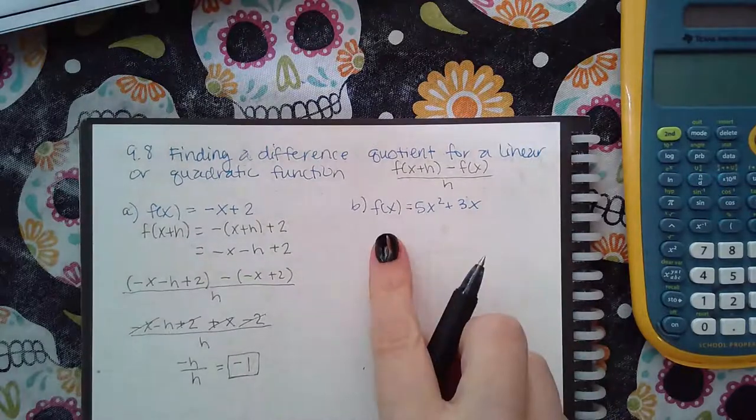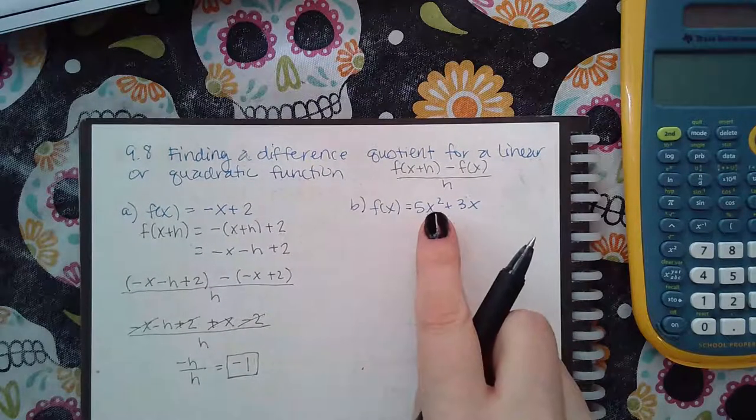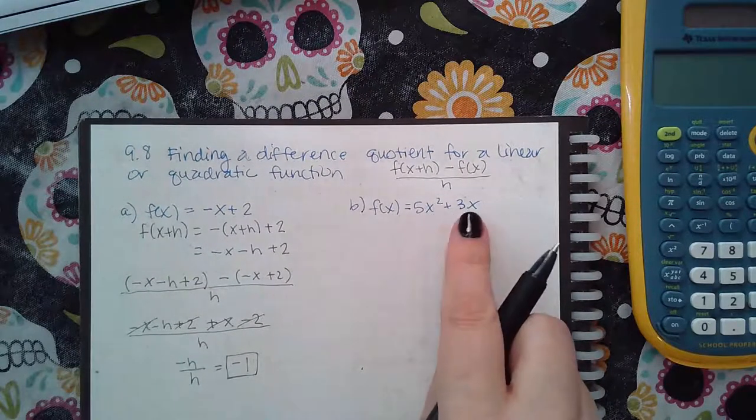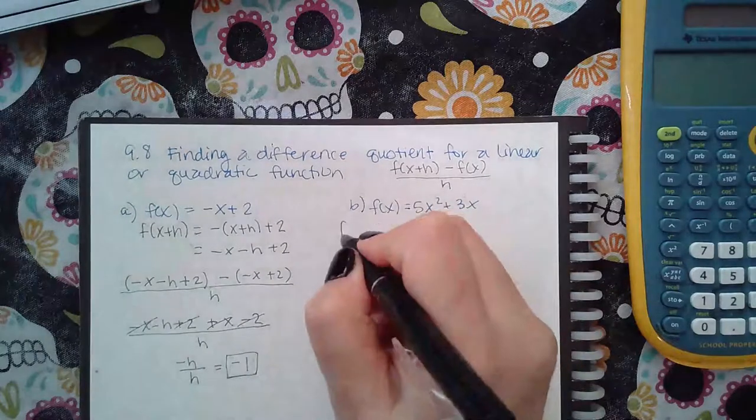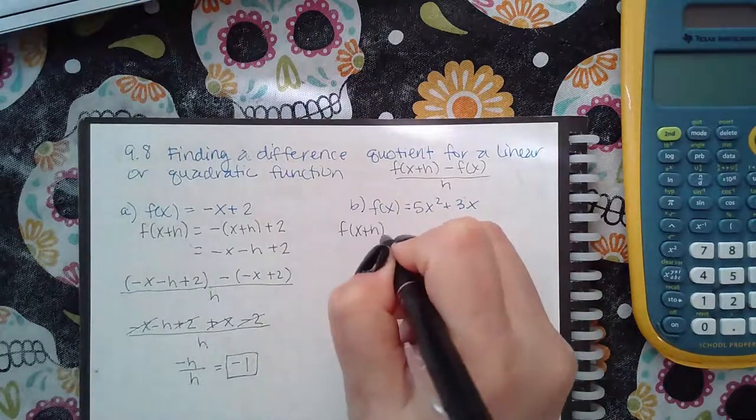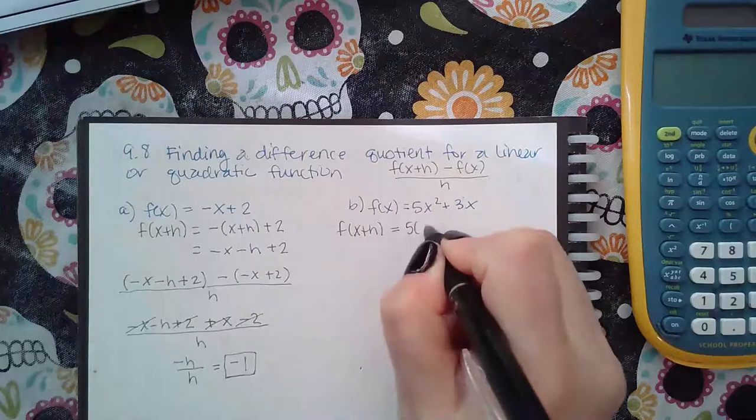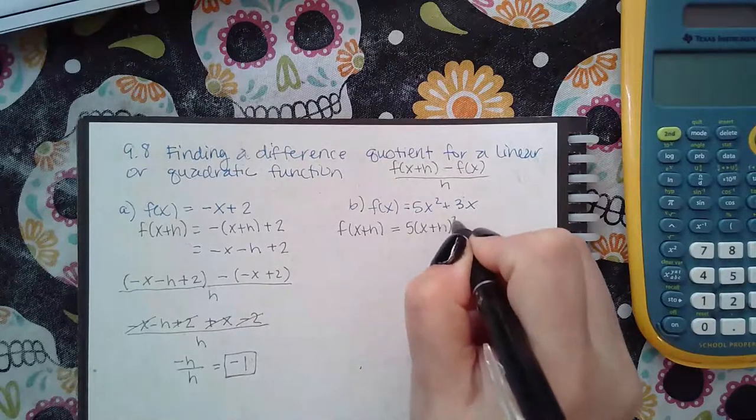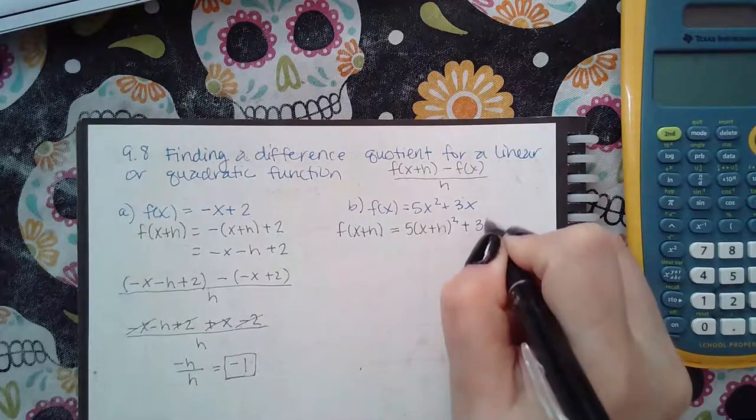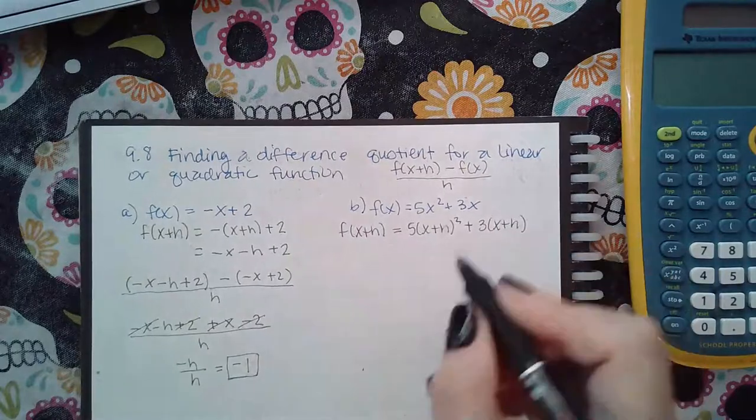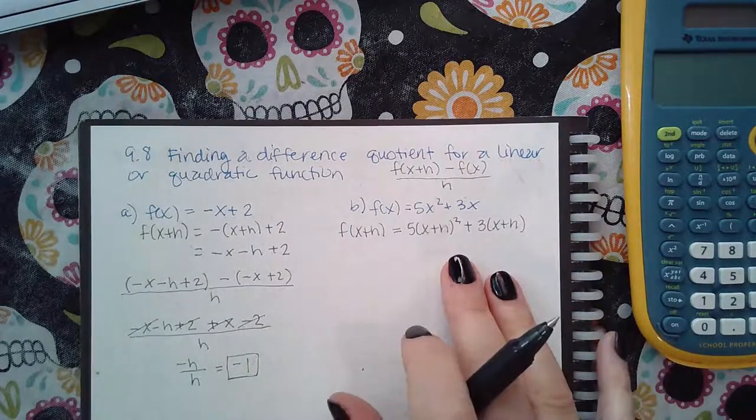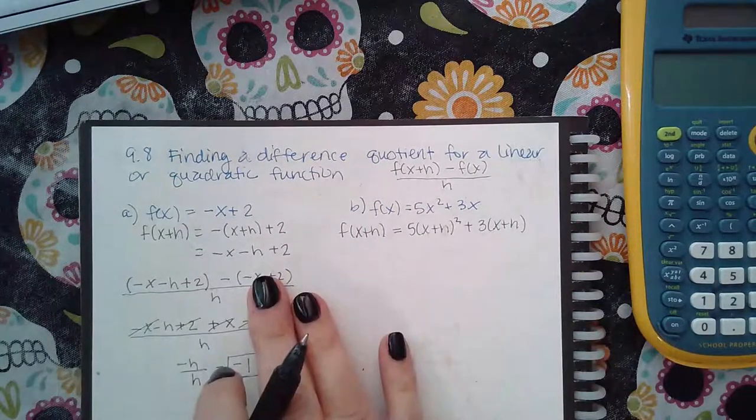So for this one, I'm going to be plugging in x plus h here and here. And each time I do it, I need to make sure that it's in parentheses. So x plus h and then the square x plus 3 times x plus h. Now this one requires a lot more simplification than the previous problem.